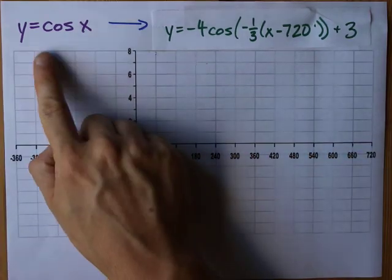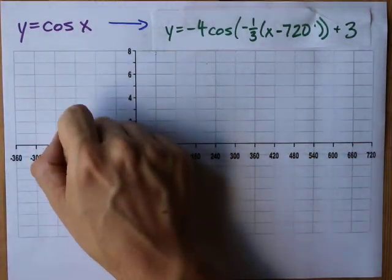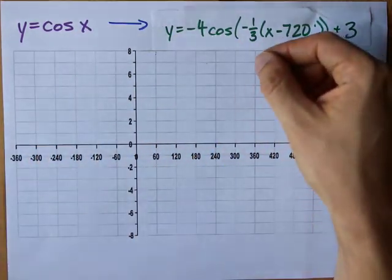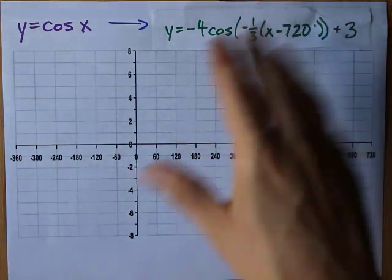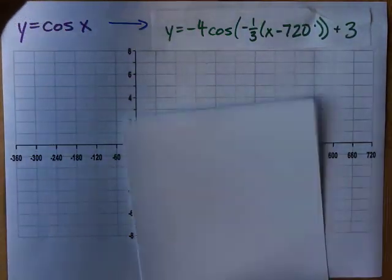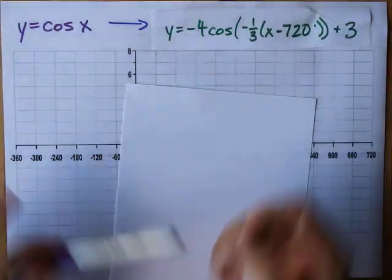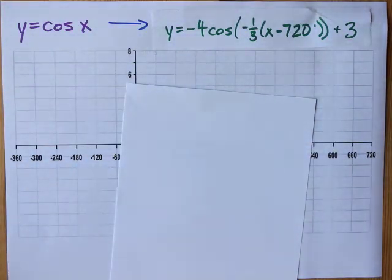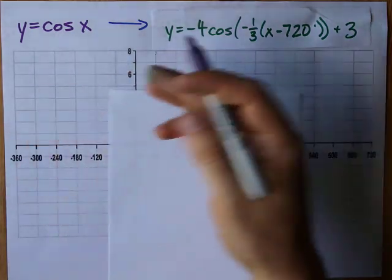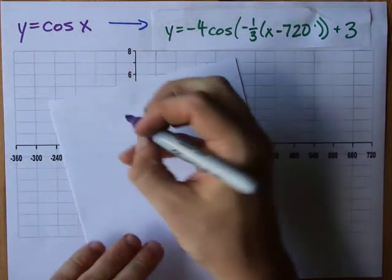Hello! Let's graph y equals cos x and a transformed version of that as quick as we can. Let's take all the shortcuts I know. Step one, let's graph the base function.